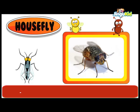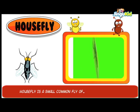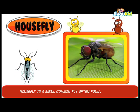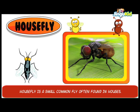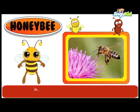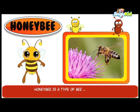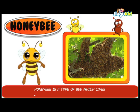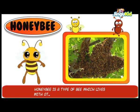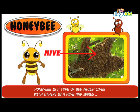Housefly is a small common fly often found in houses. Honeybee is a type of bee which lives with others in a hive and makes honey.